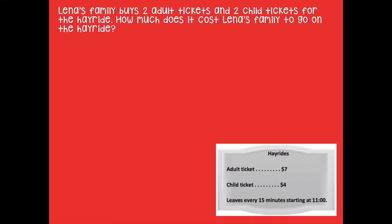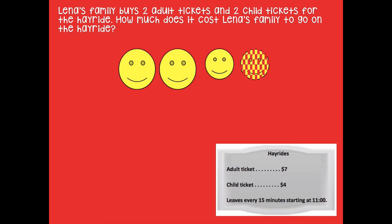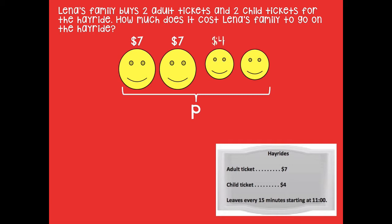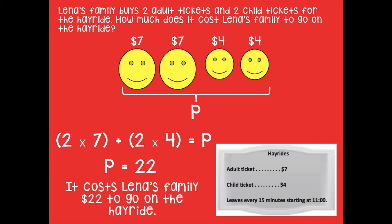Here's another way — I thought this would be fun. I drew one adult, two adults, one child, and another child. All of these together represent the cost of the hayride. For this one I labeled it P for price. I labeled $7 for each adult and $4 for each child, and used the same multiplication equation. P still equals 22, and the sentence is still the same: it cost Lena's family $22 to go on the hayride.